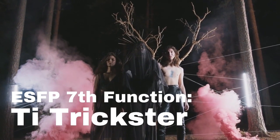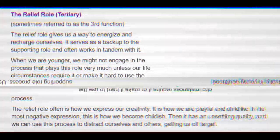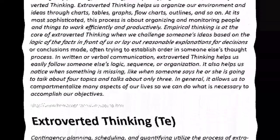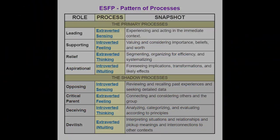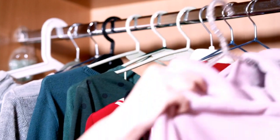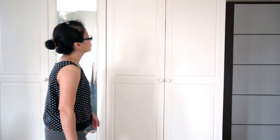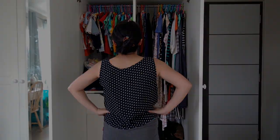ESFP seventh function: TI Trickster. The ESFP's third shadow function and seventh function overall is introverted thinking, the shadow side of their tertiary extroverted thinking. The tertiary function is described as a relief role and backup to the auxiliary function, and also describes alternative ways in which we like to be creative and have fun. ESFPs derive some fun and ego gratification from organizing their environment and doing technical planning. However, ESFPs may sometimes overestimate the strength of their tertiary TE function as being equal to the dominant or auxiliary TE function of other types.